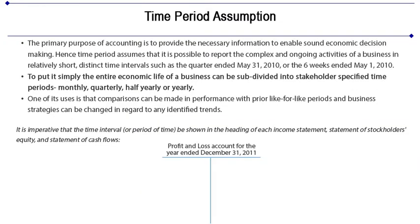The time period assumption: the primary purpose of accounting is to provide necessary information to enable sound economic decision making. The time period assumption assumes that it is possible to report the complex and ongoing activities of a business in relatively short, distinct time intervals — such as the quarter ended May 31, 2010, or the six weeks ended May 1, 2010. The entire economic life of a business can be subdivided into stakeholder-specified time periods: monthly, quarterly, half-yearly, or yearly.